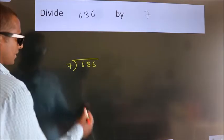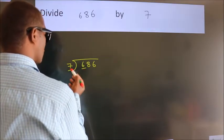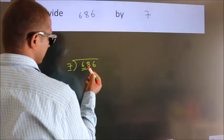Next. Here we have 6, here 7. 6 smaller than 7. So, we should take 2 numbers, 68.